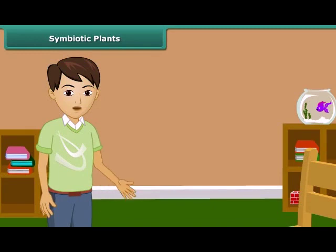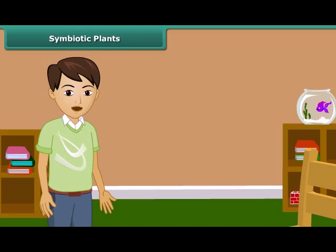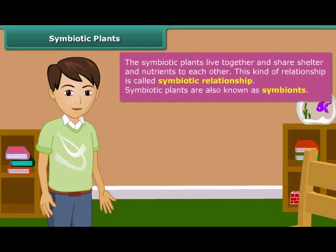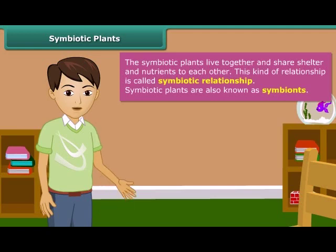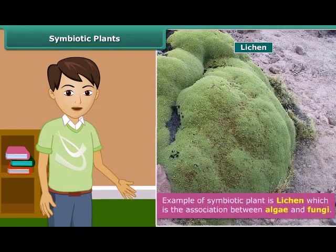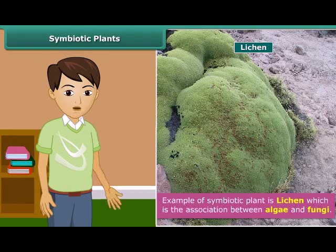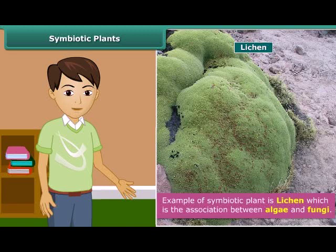Friends, have you ever listened about symbiotic relationship? The relationship between two dissimilar organisms in which both are living together and share shelter and nutrients with each other is called symbiotic relationship. The organisms involved in this kind of relationship are called symbionts. Lichen is a good example of symbiotic relationship. Lichen is the association between algae and fungi. In this relationship, algae provide food to fungi, and fungi provide protection, absorbed water and minerals to algae.